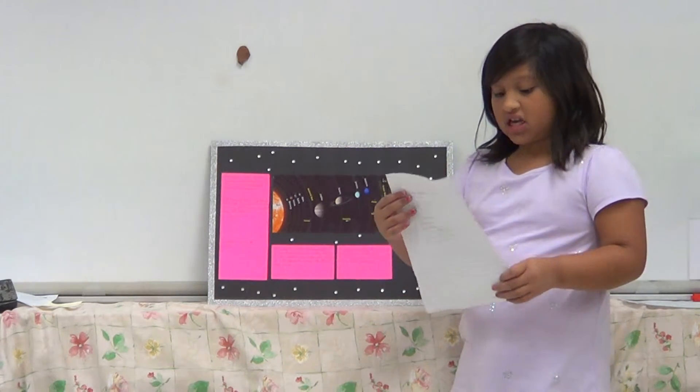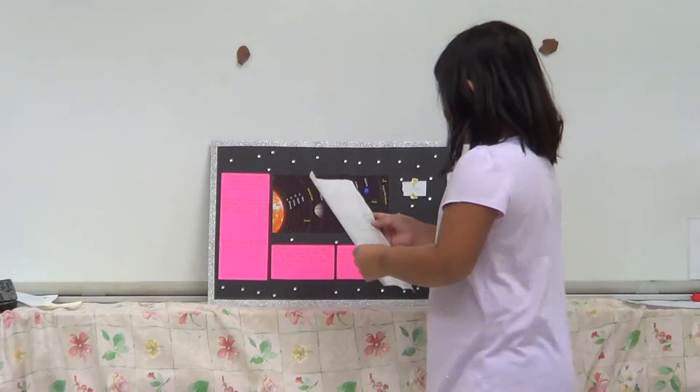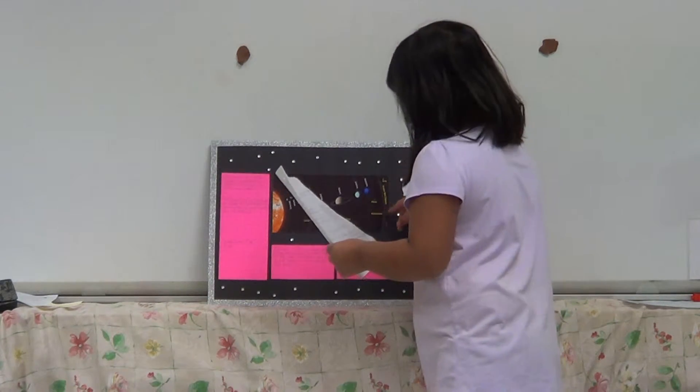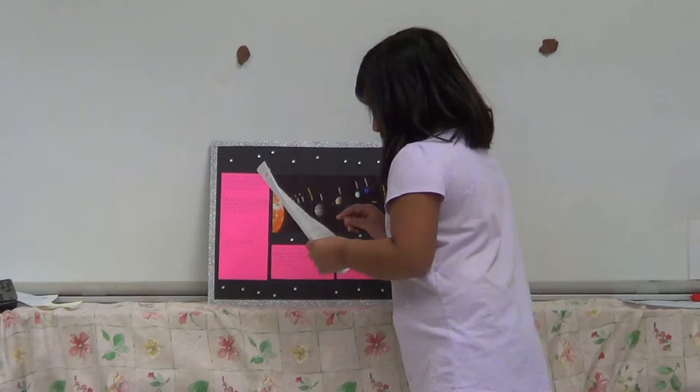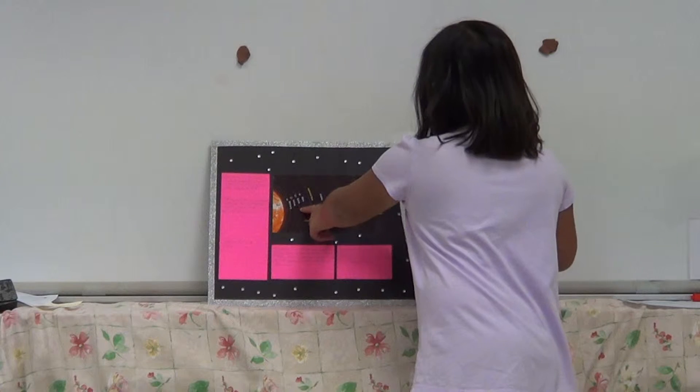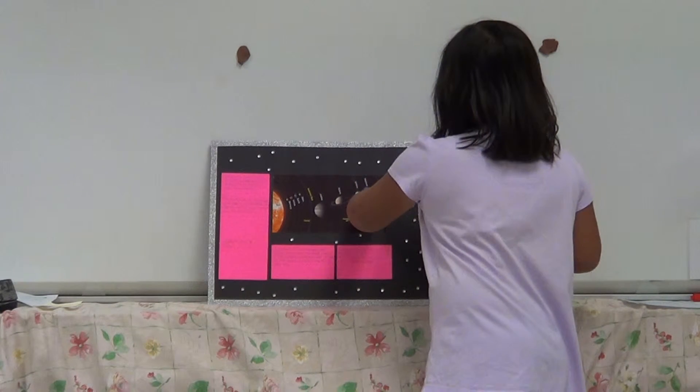Now I am going to talk about our planets. Our solar system has eight planets, which are Neptune, Pluto, Mercury, Venus, Earth, Mars, Jupiter, and Saturn.